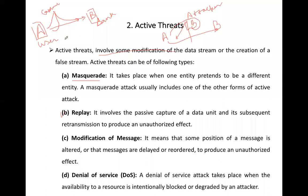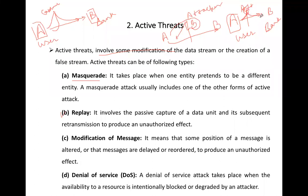The third active threat is Modification of Message. Suppose A is a user and B is a bank. A sends a transaction message — for example, transfer 50,000 rupees to account number XYZ — to the bank. The attacker captures this message, changes the account number, and then transmits the altered message towards the bank. So the message is captured, altered, and then sent.